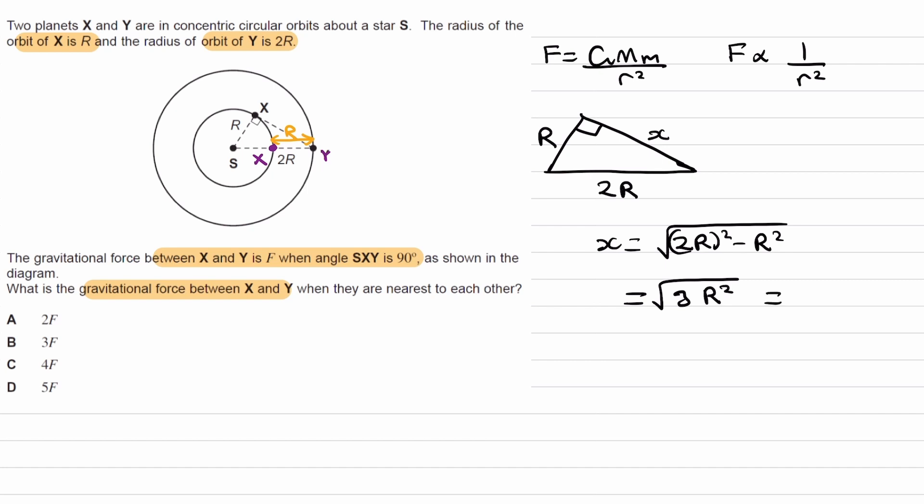We can also rewrite this as root 3 times R. We can separate the square root into two parts, root 3 and then root R squared. So the initial separation between them is root 3R, and the new separation is R.